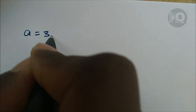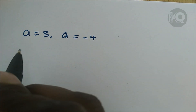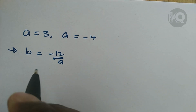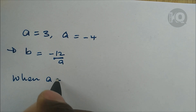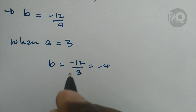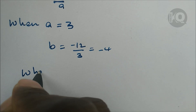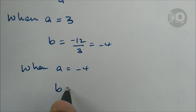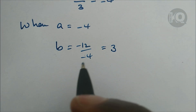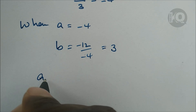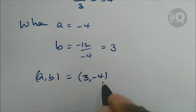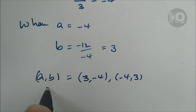Using b equals minus 12 over a: when a equals 3, b equals minus 12 divided by 3, which equals minus 4. And when a equals minus 4, b equals minus 12 divided by minus 4, which equals 3. So the final solution is (a, b) equals (3, minus 4) or (minus 4, 3).